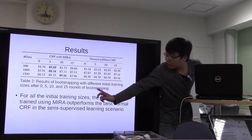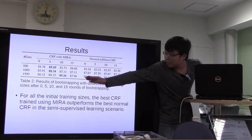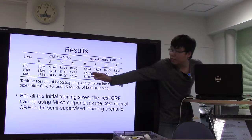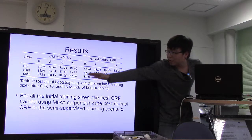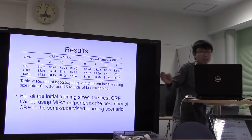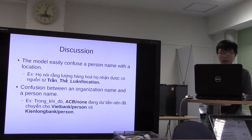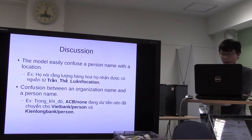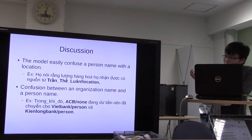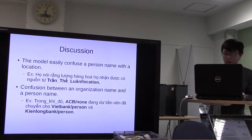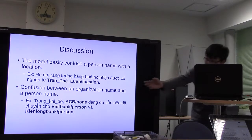The results show that ten rounds achieve the highest score, but between rounds 12 and 15 the score decreases. In the discussion, the model easily confuses a person's name with a location name, because in Vietnamese sentence structure, if you replace a word with a person's name the sentence is still grammatically correct.